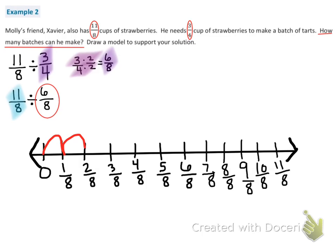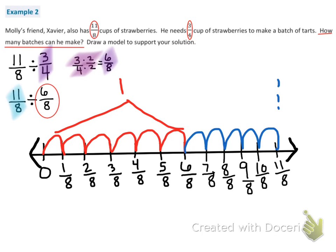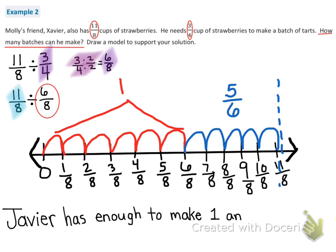So 1, 2, 3, 4, 5, 6. That's one group. Then 1, 2, 3, 4, 5. But I only have 5. I have 5 out of 6, so that's exactly what I'm going to write: 5 sixths. So I know that Xavier has enough to make 1 and 5 sixths batches.